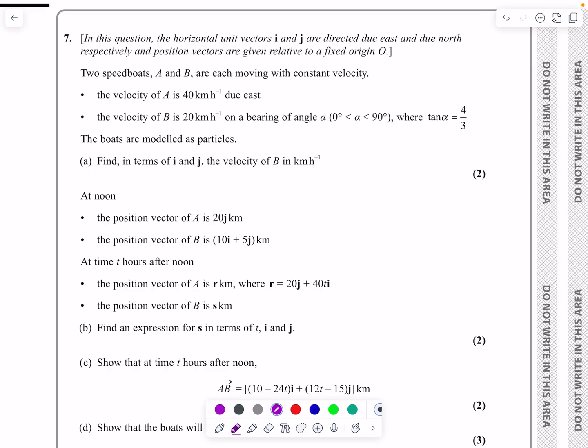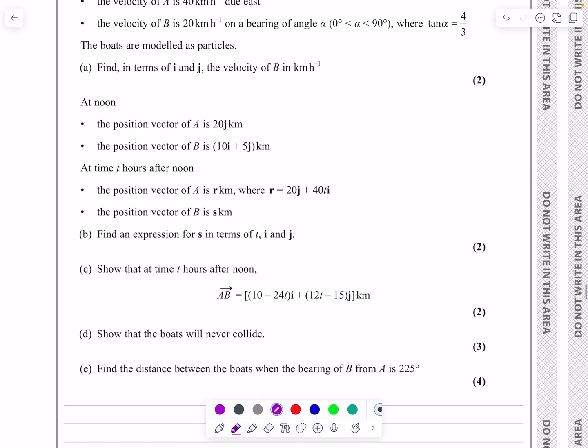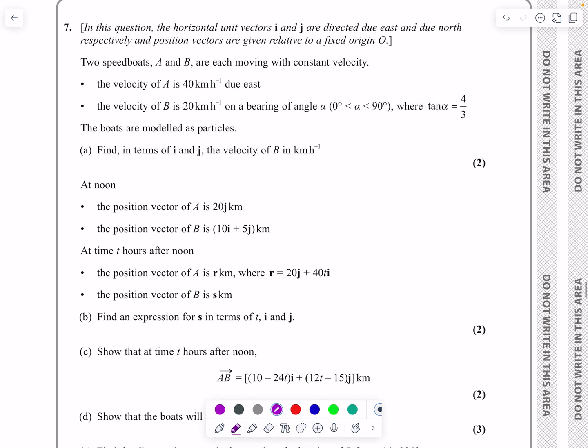Okay, this is the M1 paper from June 2024. It's question number seven, and if we have a look at it, we can see this is a vectors question, in particular, vector equation of a line.